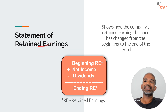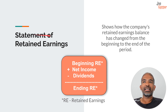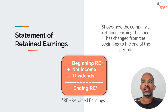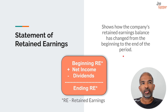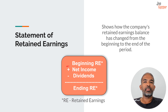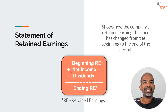Next, the statement of retained earnings, also known as the statement of owner's equity or the statement of accumulated earnings. Retained earnings refers to profits that have been retained by the firm. This statement shows how the company's retained earnings balance has changed from the beginning to the end of the period. So it shows how much profit has been made during a particular period and how much of that has been paid out as dividends — whatever profits are not distributed as dividends are retained by the firm.